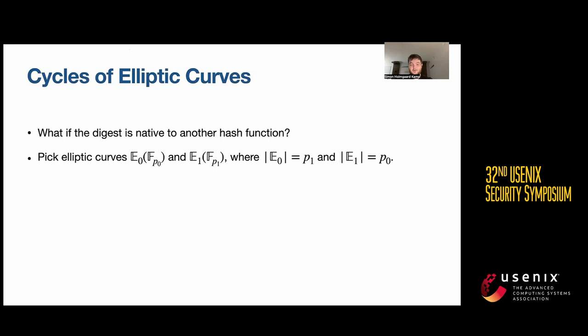If you haven't seen it before, basically, a two-cycle of elliptic curves is if you have one curve where the field of definition is F_P0, then the order of the other curve must be P0, and vice versa. In other words, the scalar field of one is the base field of the other.